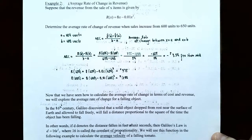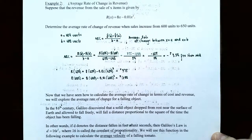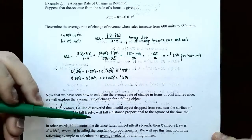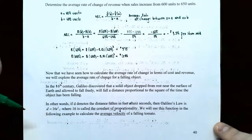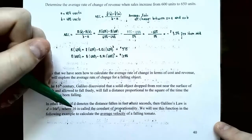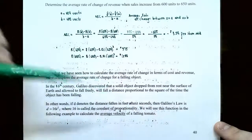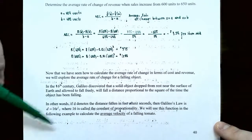Now we'll use average rate of change for a falling object. In the 16th century, Galileo discovered that if you drop a solid object from rest near the surface of the earth and allow it to fall freely — ignoring air resistance — it falls a distance proportional to the square of the time falling. Galileo's law gives the distance in feet as D equals 16T squared, where T is time in seconds.